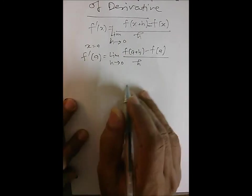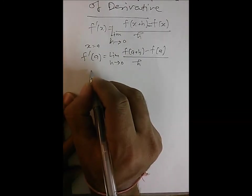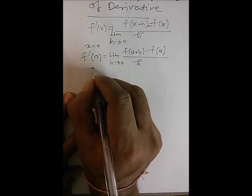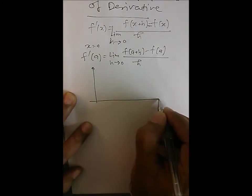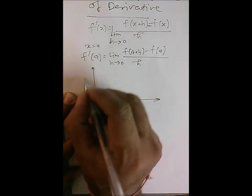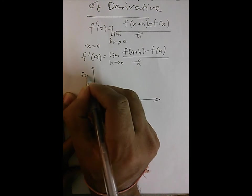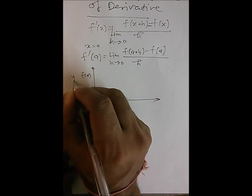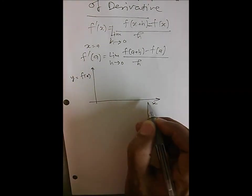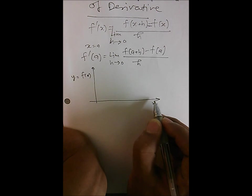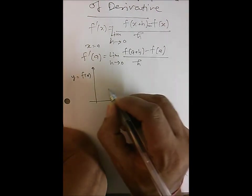Now let's assume there is a function f(x) and its graph is plotted — on the y-axis we plot f(x), and on the x-axis we have the value of x. As the value of x changes, the function f(x) takes several values.